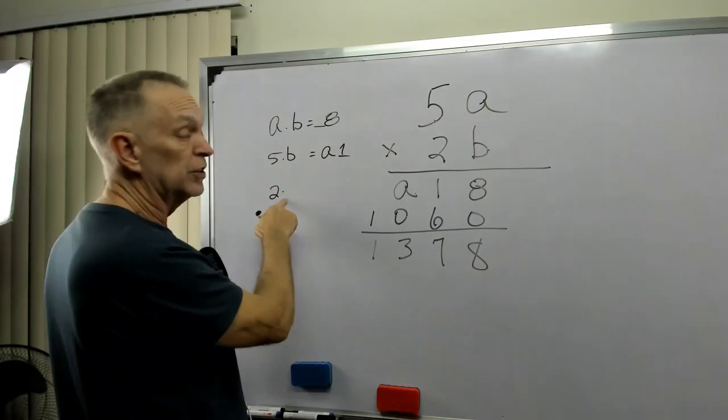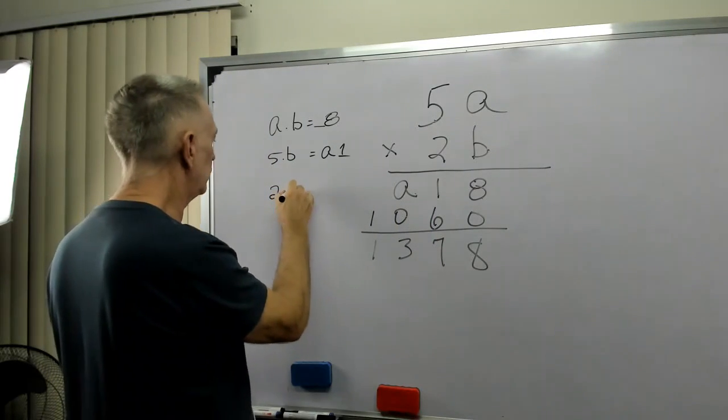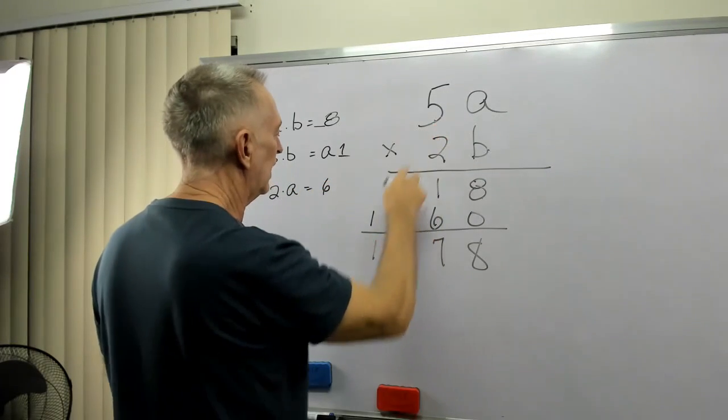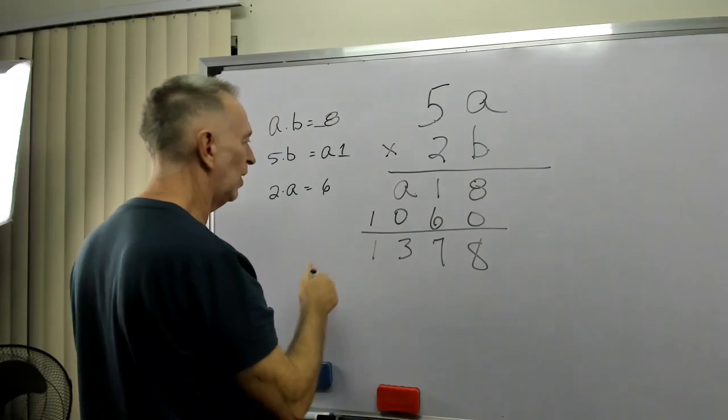2 times, I'm putting a dot for multiplication. 2 times A equals 6. 2 times 5 equals 10. Hey, we know that one.